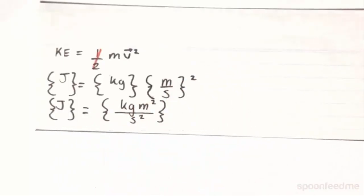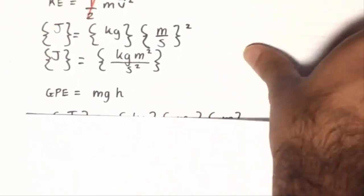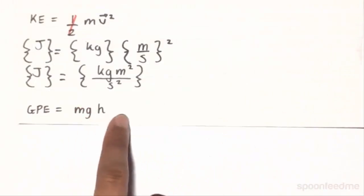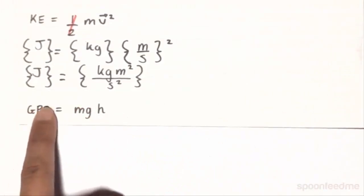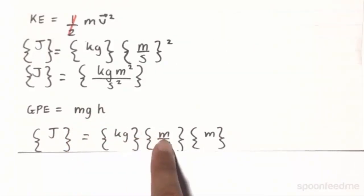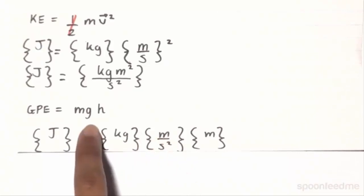To verify this, we can look at our gravitational potential energy, which is quantified by the equation mgh. Gravitational potential energy is in joules as well. The mass is in kilograms. The gravitational acceleration is in meters per second squared.